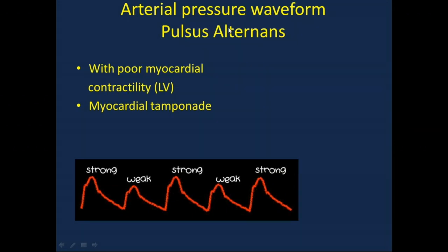The arterial pressure waveform can present as pulsus alternans, which is an abnormal and dangerous sign. It can reflect poor myocardial performance or poor myocardial contractility, especially of the left ventricle, or it can be consistent with cardiac tamponade. In pulsus alternans, you have a strong beat alternating with a weak beat, and so on.